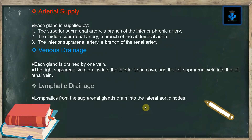Arterial supply: Each gland is supplied by a superior suprarenal artery, which is a branch of the inferior phrenic artery, and the middle suprarenal artery, which is a branch of the abdominal aorta.